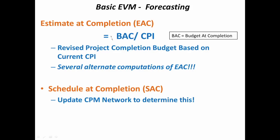This is just one of the formulations for estimated cost at completion. There are several alternate computations based on different assumptions. Here we extrapolate based on current CPI, but in a project things can change — the current cost performance may not hold in the future, so estimated completion is a dynamic aspect that will keep changing.